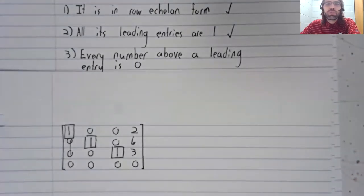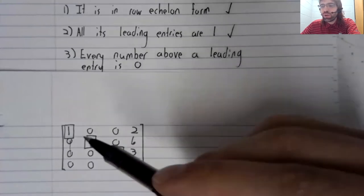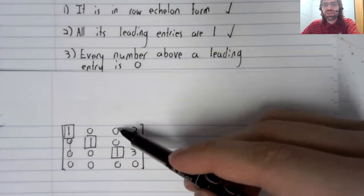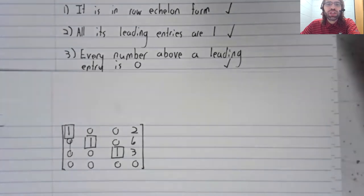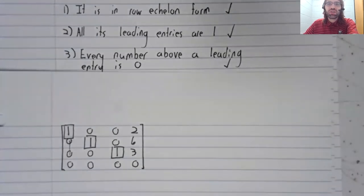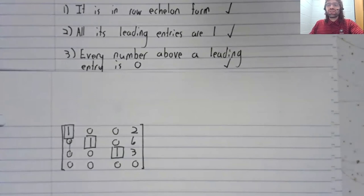And all the numbers above a leading entry are supposed to be zero. Yes, yes, yes. So this matrix satisfies all three of these conditions and is in reduced row echelon form.